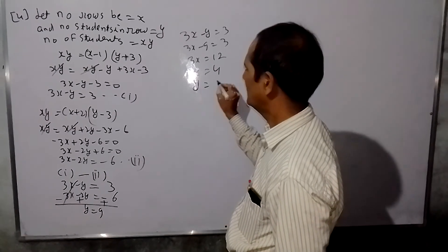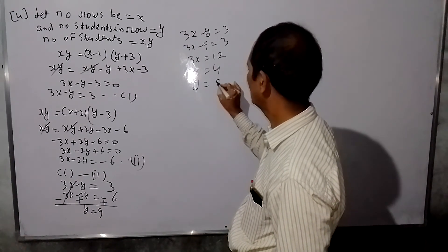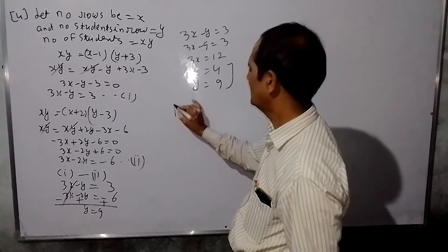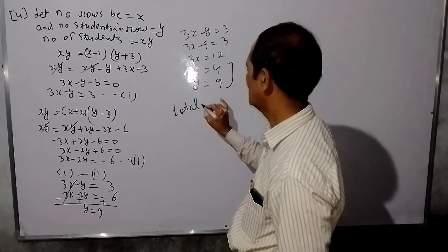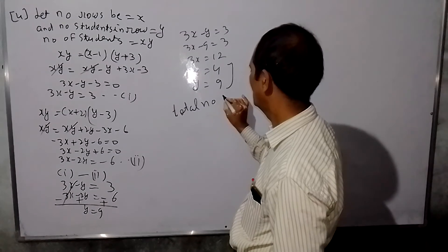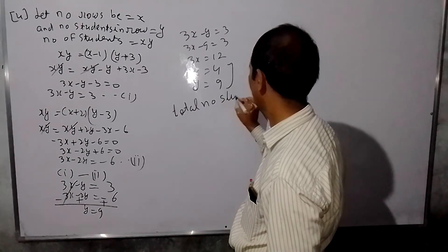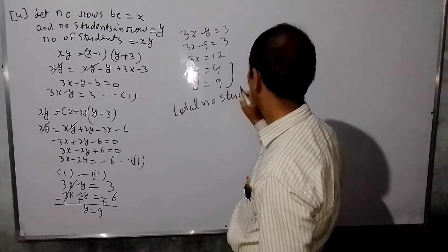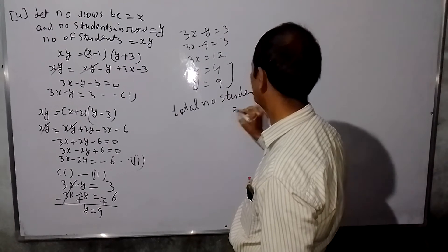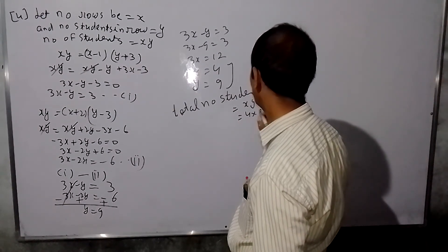Number of rows X is 3, number of students per row Y is 9. Total number of students equals X into Y equals 3 into 9 equals 27. Please like this video, I will see you next time.